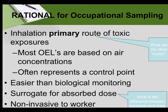Our rationale for occupational sampling, or airborne sampling, is that inhalation is typically the primary route of exposure — at least it's the one that's most understood, as opposed to dermal exposure. Most occupational exposure limits are based on airborne concentrations, and this is often used as a starting point or point of reference. It's easier than biological monitoring and less invasive to the worker. We use our inhalation exposure monitoring as a surrogate for absorbed dose.